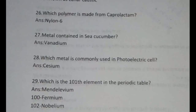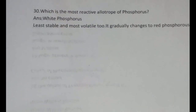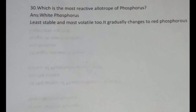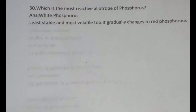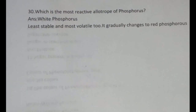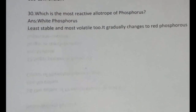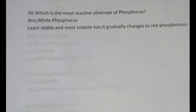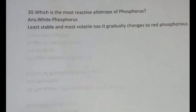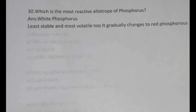The 30th and final question of today: which is the most reactive allotrope of phosphorus? It's white phosphorus. There are three types — black, white, and red phosphorus — of which white phosphorus is the most reactive. It is the least stable and most volatile, and it gradually changes to red phosphorus.